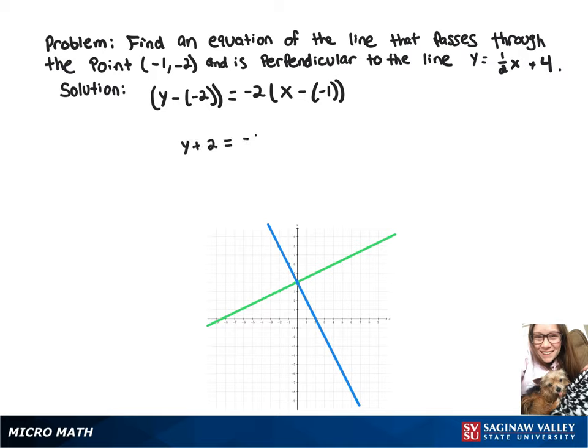Now we've got y plus 2 equals negative 2 times x plus 1. We can distribute that negative 2, which gives us y plus 2 equals negative 2x minus 2.